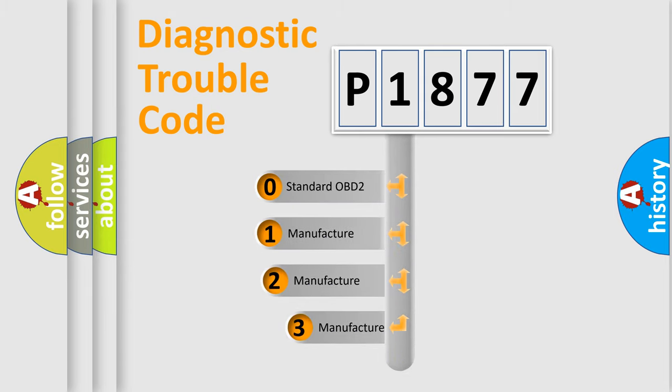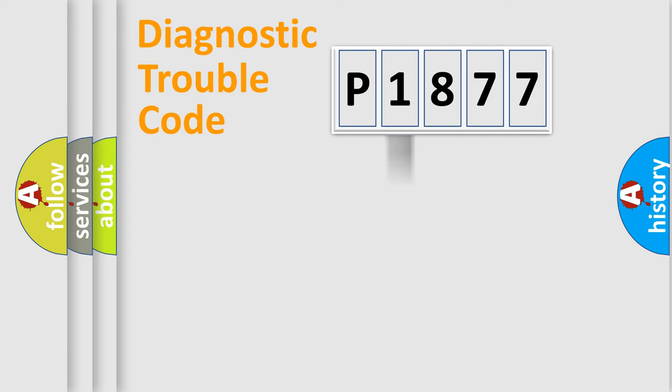If the second character is expressed as zero, it is a standardized error. In the case of numbers 1, 2, 3, it is a more prestigious expression of the car specific error.